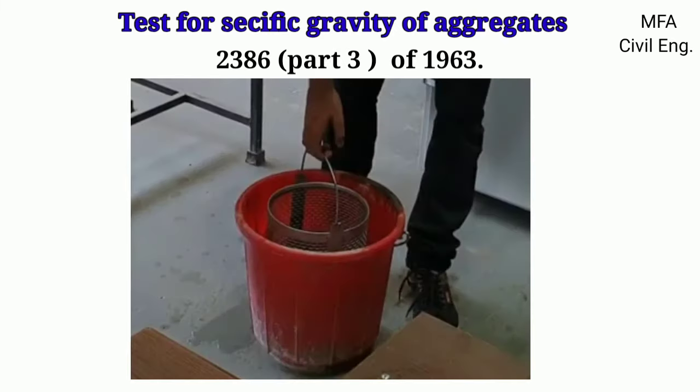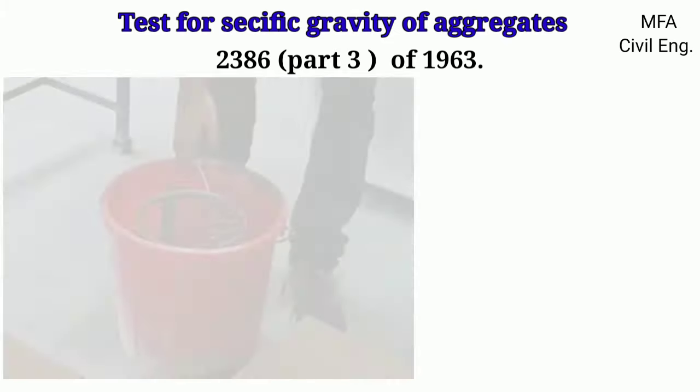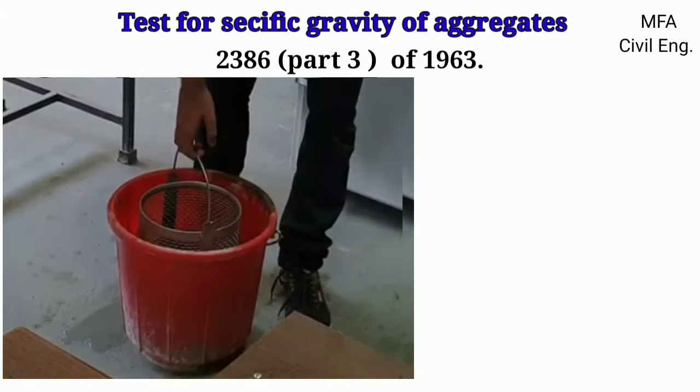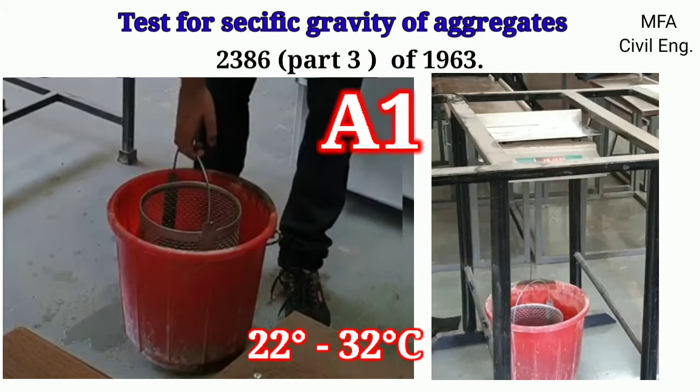They are kept in water for a period of 24 plus minus half hour. The basket and the aggregate are then shaken and weighed in water at a temperature of 22 to 32 degrees Celsius. Let the weight be A1.